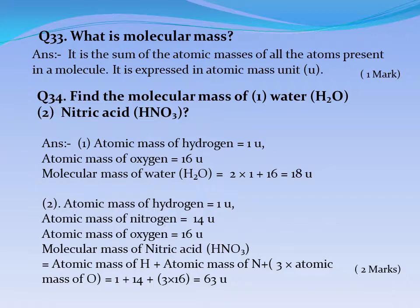Question No. 34: Find the molecular mass of water H2O and nitric acid HNO3. Answer 1: Atomic mass of hydrogen = 1U, atomic mass of oxygen = 16U. Molecular mass of H2O = (2×1) + 16 = 18U. Answer 2: Atomic mass of hydrogen = 1U, nitrogen = 14U, oxygen = 16U. Molecular mass of HNO3 = 1 + 14 + (3×16) = 63U.